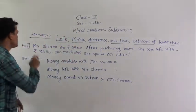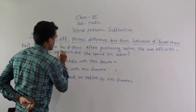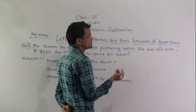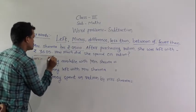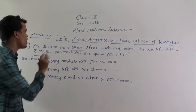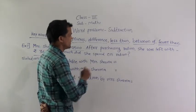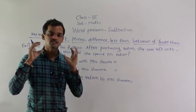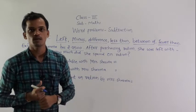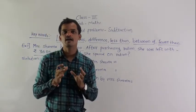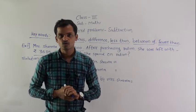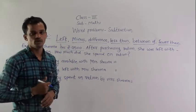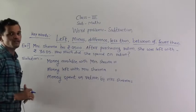Word problem: Mrs. Sharma has rupees 9500. After purchasing ration, she was left with rupees 3685. How much did she spend on the ration? First, read the word problem twice, understand what is given, and then decide which operation to use to get the answer. Here, you have to do a subtraction operation.